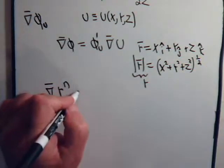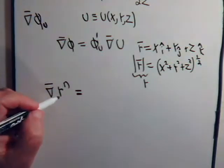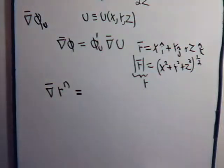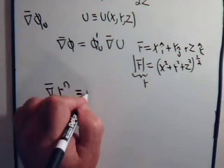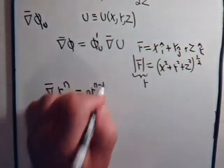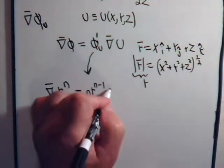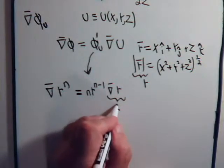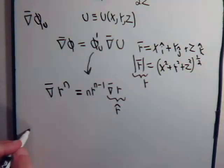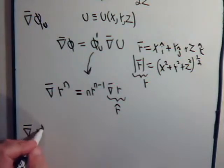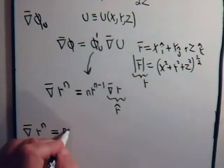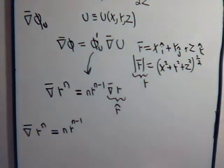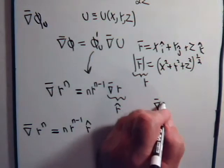Using our new property, this would be equal to the derivative of r to the n with respect to r, times the gradient of r. The derivative gives us n times r to the n minus 1, and we know the gradient of r is the unit position vector r-hat. So the gradient of r to the n equals n times r to the n minus 1 times the unit position vector.